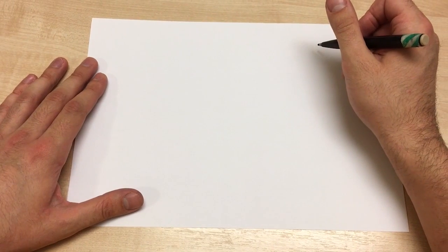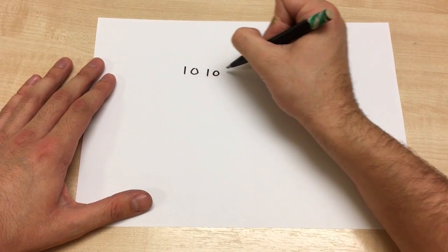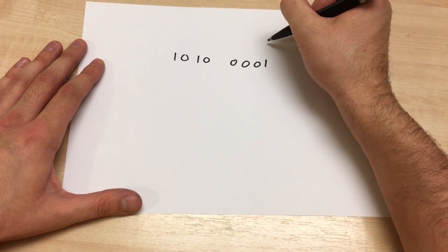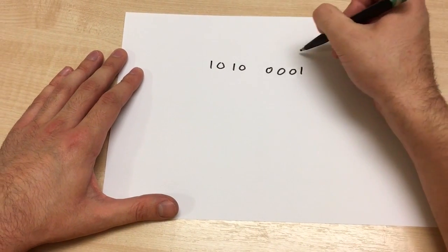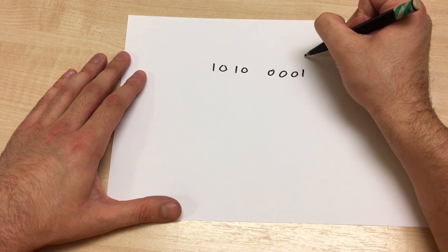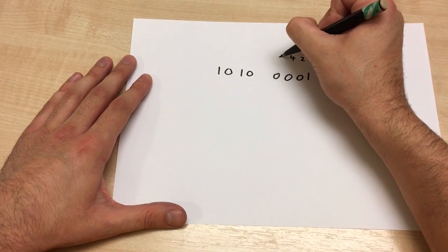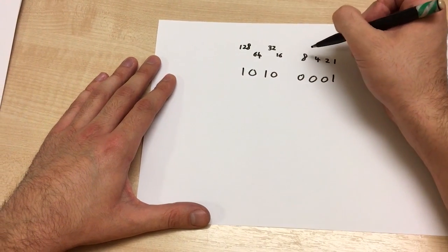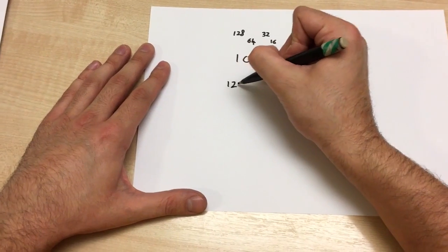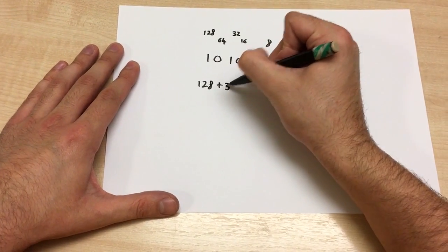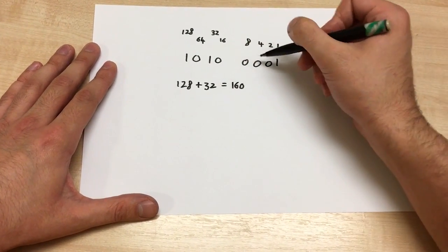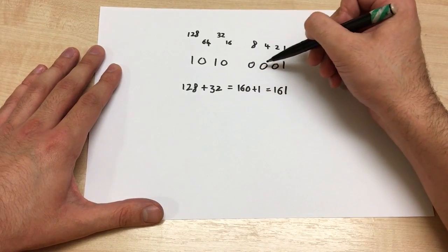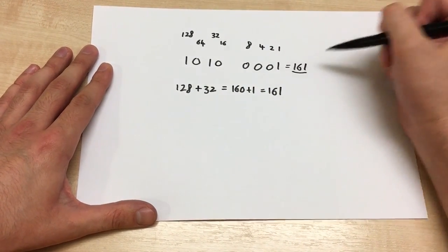Let's do a slightly longer decimal conversion. Take the binary number 10100001 and try to convert it to decimal. First, we write the decimal equivalent for each column if it were a 1: 1, 2, 4, 8, 16, 32, 64, 128. The 128 column is high, so we have 128. The 32 column is high, so plus 32, giving 160. Then the 1 column is high, so plus 1, which is 161. So 10100001 in binary equals 161 in decimal.